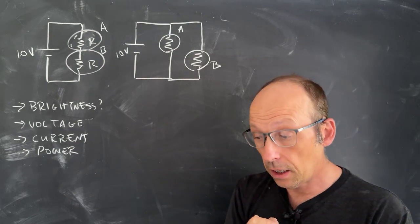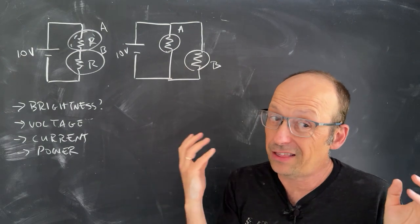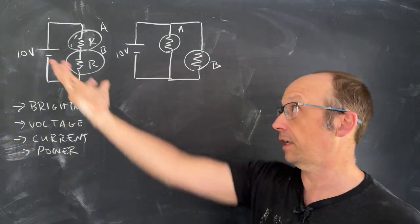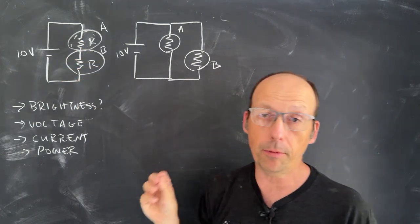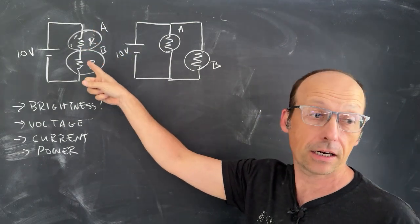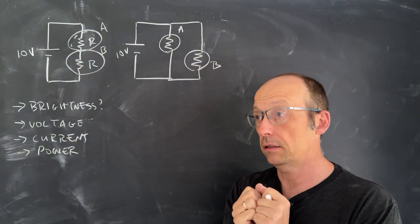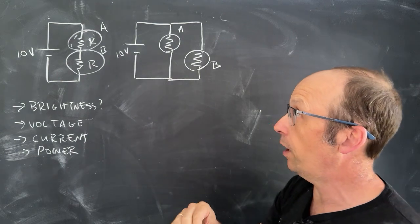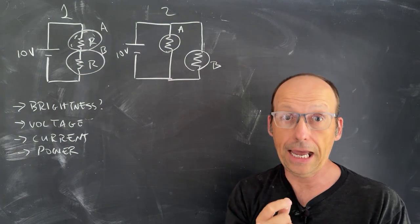This is a physics question from class, but it really helps us formulate ideas about circuits — and they're not terribly complicated circuits. The question starts off with these two circuits. I have a 10-volt battery and two light bulbs, which we can assume are just ohmic resistors. In circuit one, bulbs A and B are connected in series. The first question is: which bulb in system two is brighter, A or B?